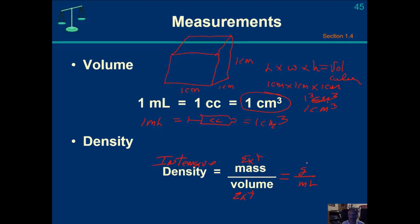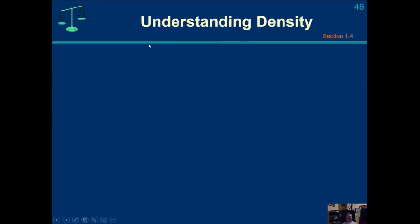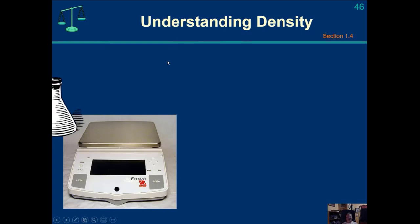The unit of mass will be grams and the unit of volume will be milliliters. They could equivalently be grams per cubic centimeter, because one cubic centimeter is equal to one milliliter. So milliliters and cubic centimeters are the same. Let's understand how we would measure density.